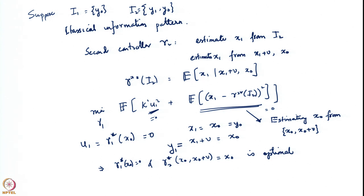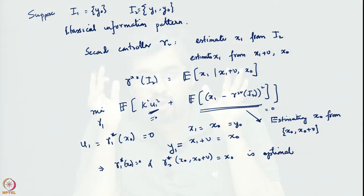What has this taught us? We looked at the Witsenhausen problem without the non-classical information structure. We assumed the information structure is classical, and what we found is that the problem is rather simple — it is extremely easy to decide what to do. In fact, you can get the globally optimal cost by using very simple controllers.